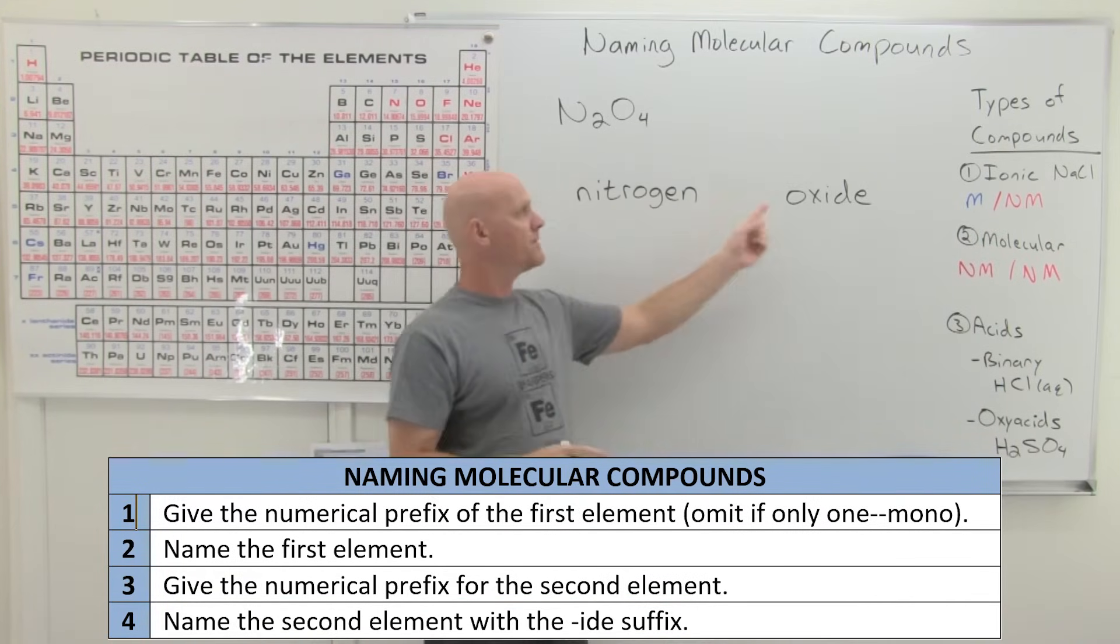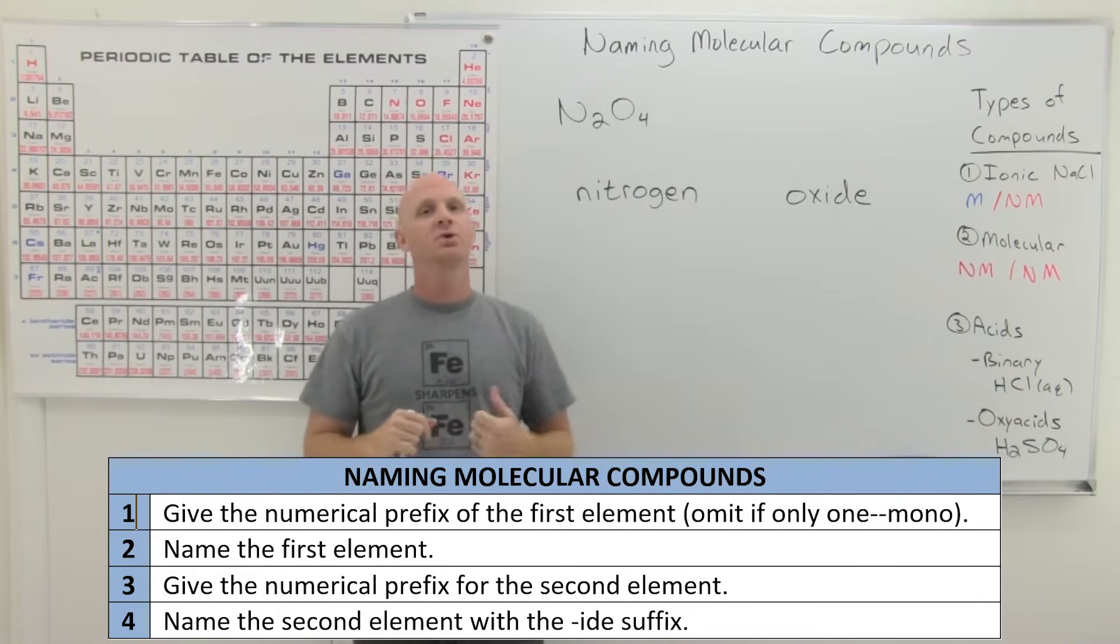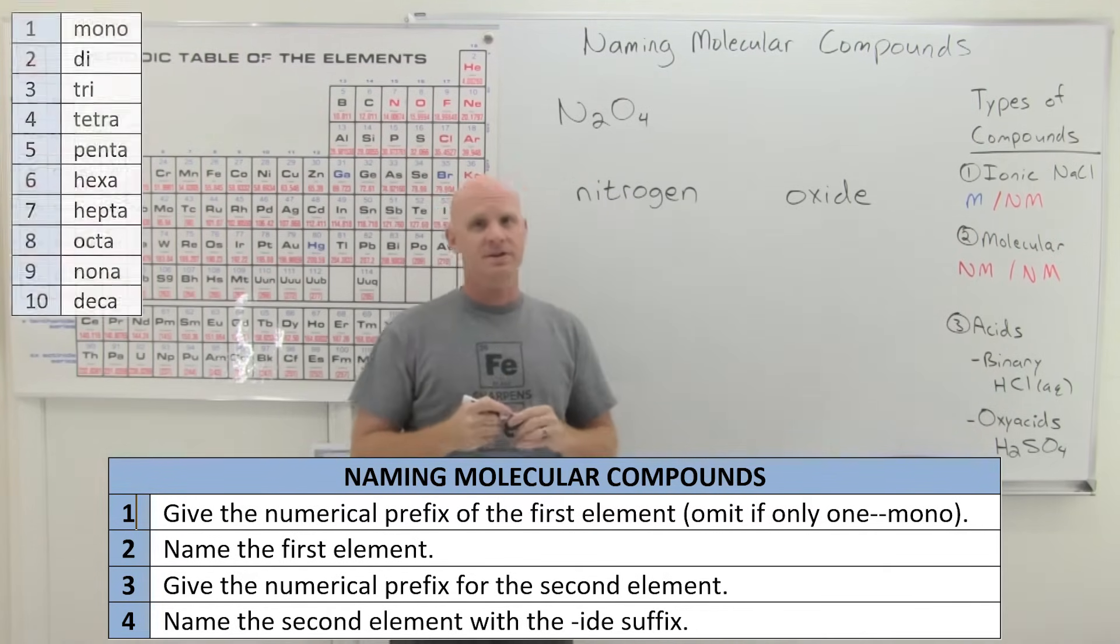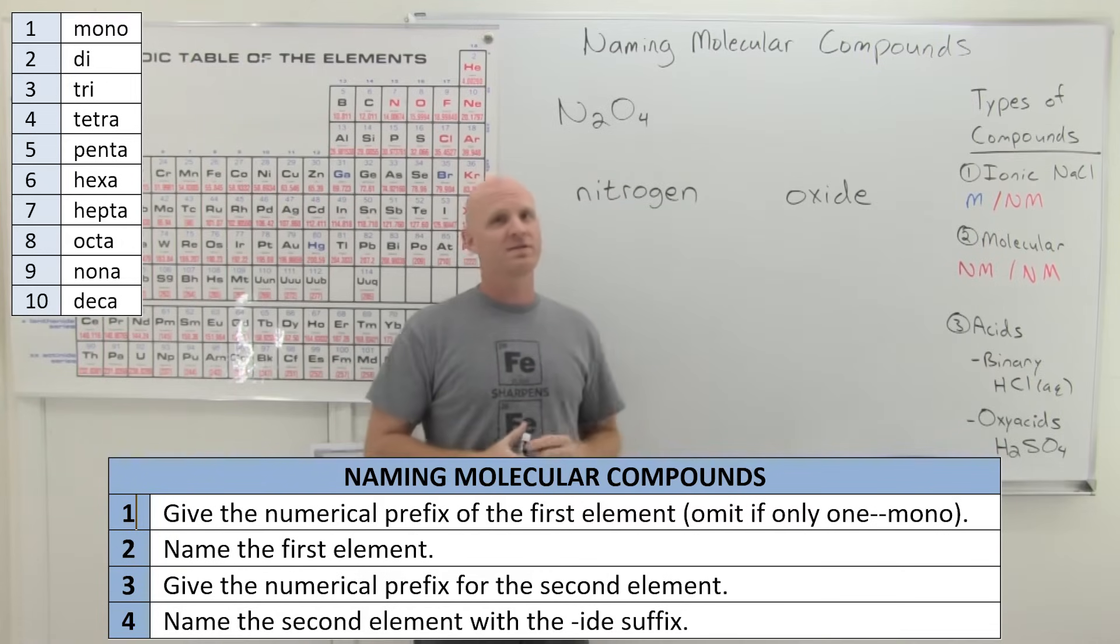However, before both of these, we may involve putting a prefix on the front. And so it turns out we have numerical prefixes for pretty much like 1 through 10 is what's typical.